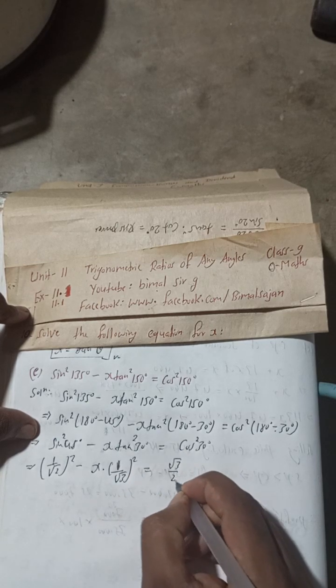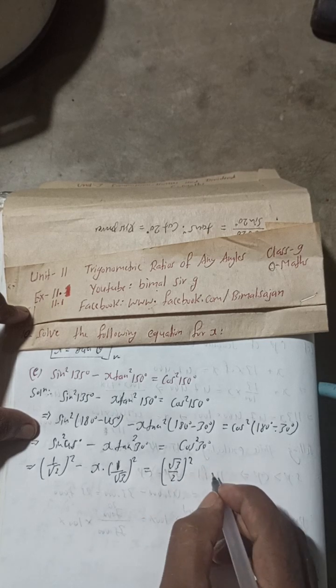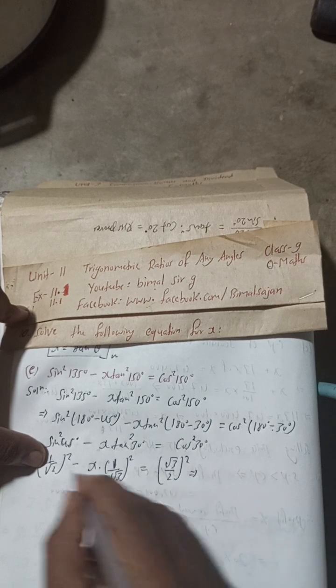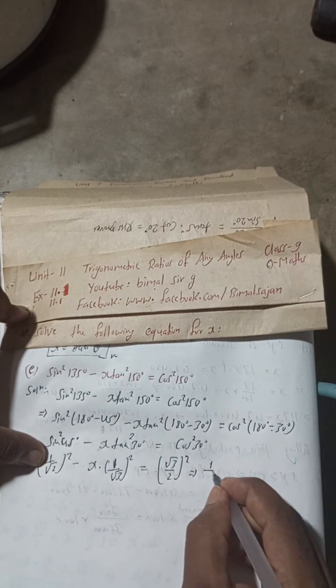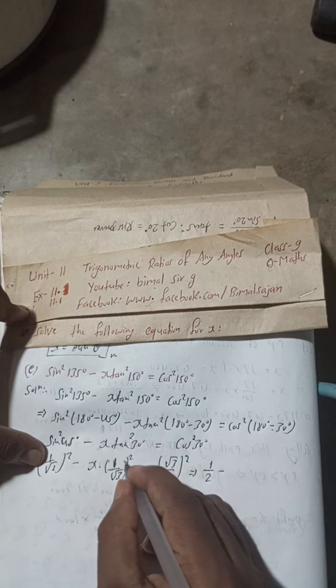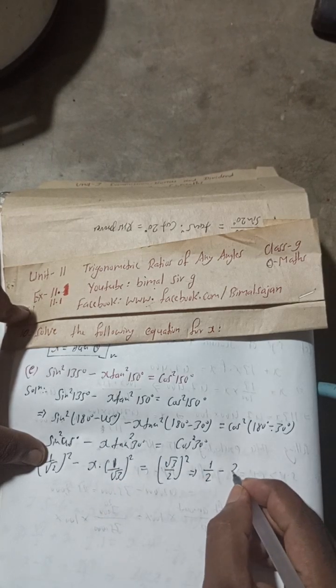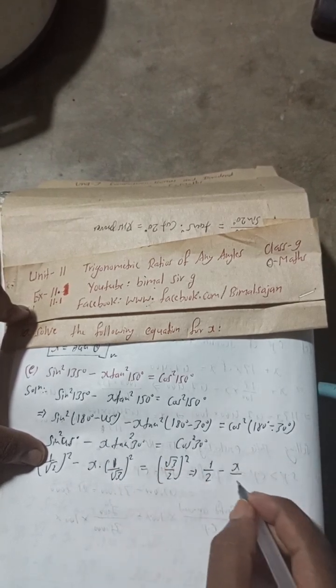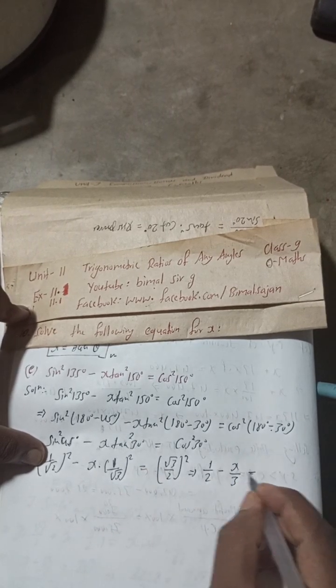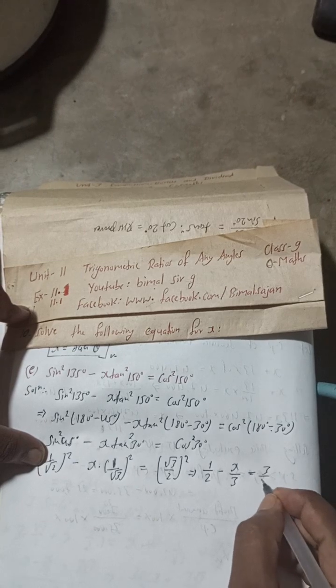This can be written as 1/2 - x/3 = 3/4. Now from here you can see the LCM is 6. So multiply this with 3, this will be 3. 1/2 minus 2x/6 equals 3/4.